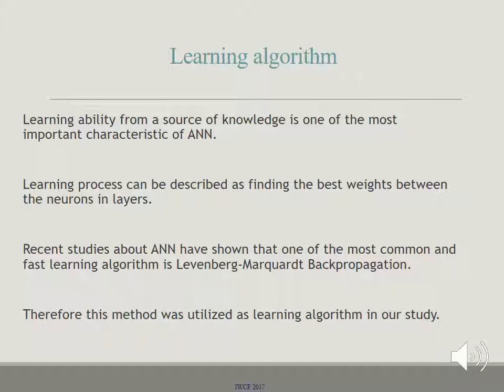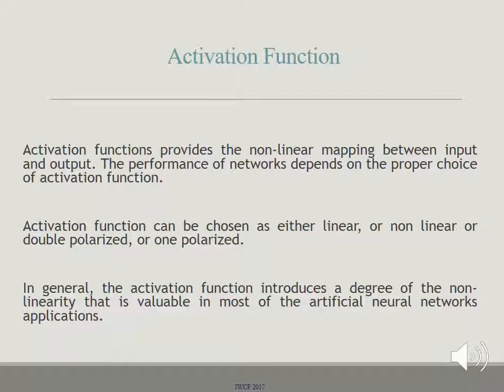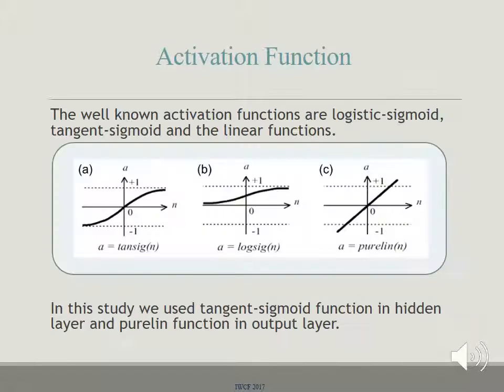Therefore, the Levenberg-Marquardt backpropagation method was utilized as the learning algorithm in this study. Activation functions provide non-linear mapping between input and output, and the performance of networks depends on the proper choice of activation function. Activation functions can be chosen as either linear or non-linear, double-polarized or one-polarized. The well-known activation functions are logistic sigmoid, tangent sigmoid, and linear functions. In this study, we used the tangent sigmoid function in the hidden layer and the pure-lin function in the output layer.